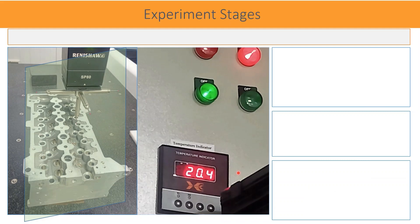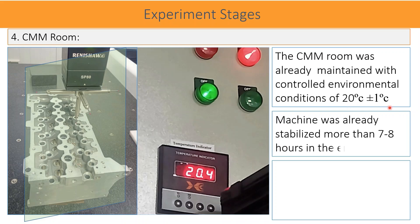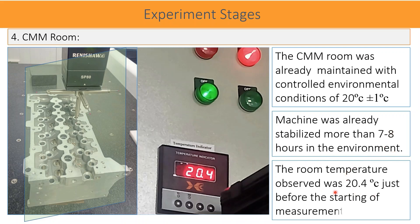CMM room. The CMM room was maintained with controlled environmental conditions of 20 degrees centigrade temperature plus minus 1 degree centigrade. Before bringing the part inside the CMM room, the machine was already stabilized for more than 7 to 8 hours in the environment. The room temperature observed was 20.4 degrees centigrade just before the starting of the measurement program on the test component.